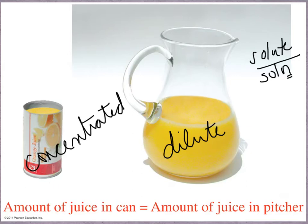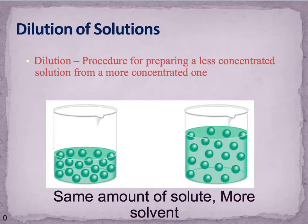Now, how do we know how much to add if we want to create a certain solution? Well, there's a calculation to show us just that. So we can do the same thing in chemistry as we do with our frozen orange juice. We're preparing a less concentrated solution from a more concentrated one.